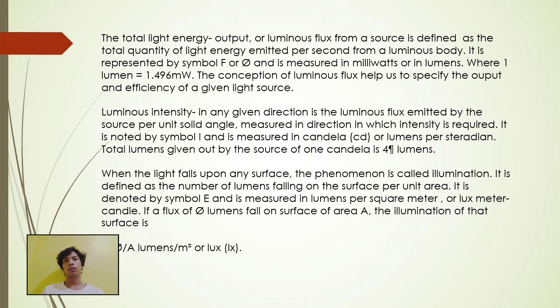When the light falls upon any surface, the phenomenon is called illumination. It is defined as the number of lumens falling on the surface per unit area. It is denoted by symbol E and is measured in lumens per square meter or lux meter candela. If a flux of lumen falls on surface of area A, the illumination of that surface is E equals flux over A lumens over meter squared or lux.